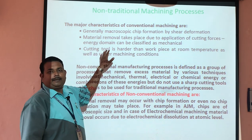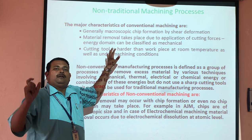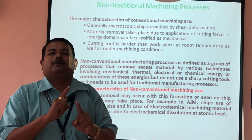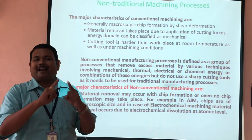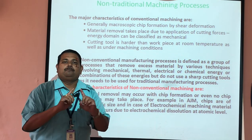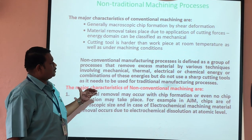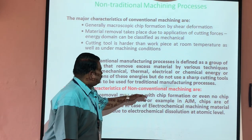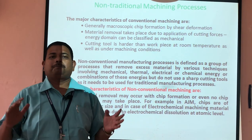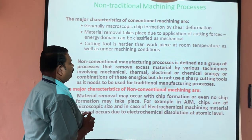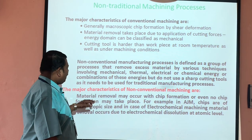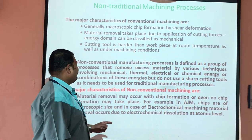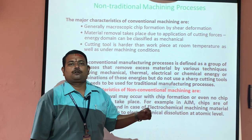A key characteristic of conventional machining is that the cutting tool must be harder than the given workpiece. If it is not harder, then metal removal cannot be possible. In non-conventional machining process, chip formation may or may not take place. For example, in AJM process, chips are of very microscopic size. But in electrochemical machining, there is no chip formation because metal removal takes place due to electrochemical dissolution.